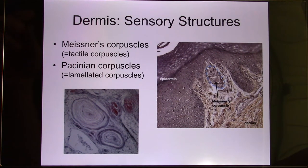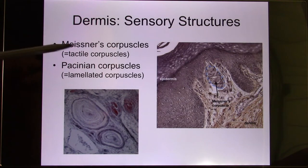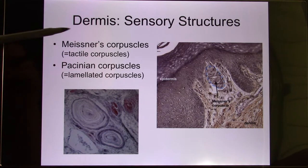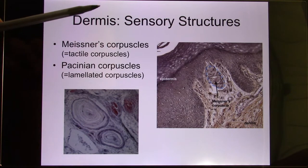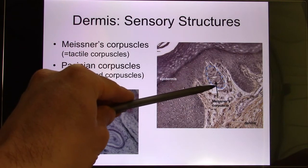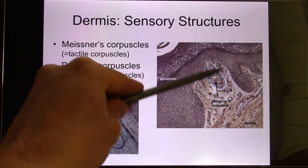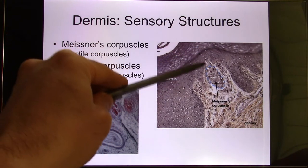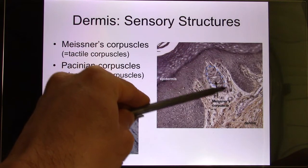In the dermis layer, we have other structures. One is called the Meissner's capsule and the second one is called the Pacinian capsule. Both of them are sensors. The Meissner's capsule senses touch, so it's closer to the surface layer. When I touch your skin, you can feel it — that's because of this.